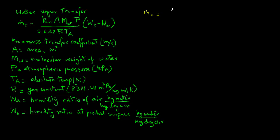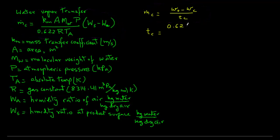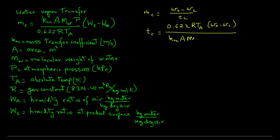Recall from the previous equation that m.c equals (w0 minus wc) divided by tc. With these two equations, if we eliminate m.c, we can write the final equation in terms of tc: tc equals 0.622 times R times ta times (w0 minus wc) divided by (km times A times Mw times P times (Ws minus Wa)). This equation can be used to find the time for the constant rate period.